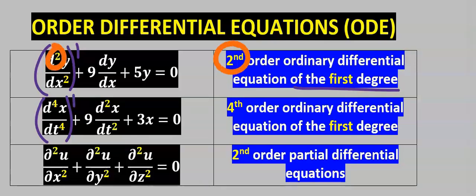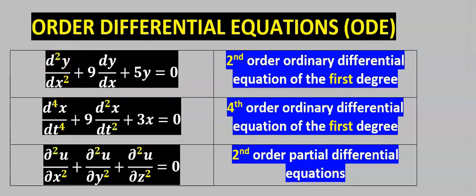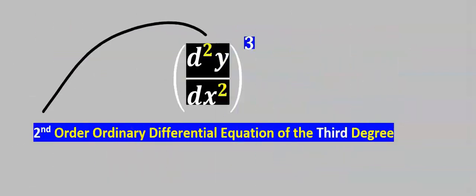And here we can say this is the second order ordinary differential equation of the first degree. Subsequently, for ordinary partial differential equation the d is slightly tilted and the highest order here is two. This is second order ordinary differential equation of the third degree.